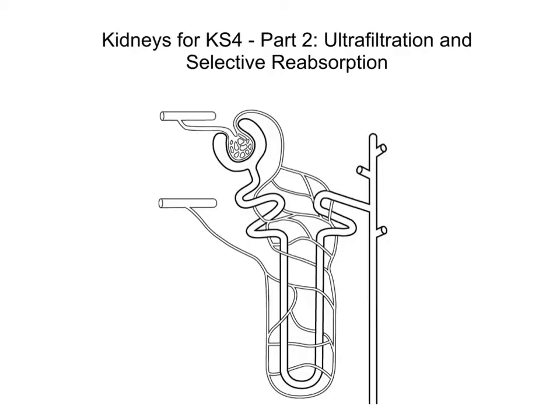Hello everyone. This video is part two of a series entitled Kidneys for Key Stage 4. In the first one, we talked about the basic structure of the kidney and the presence of nephrons, or filtration units — these functional units of the kidney. In this video, part two, we're going to look at the process of ultrafiltration and selective reabsorption — essentially the first two processes that occur at the kidney.